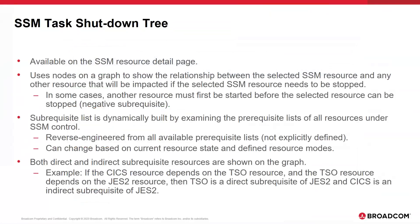The second part of this feature we will discuss is the SSM Task Shutdown tree. This resource relationship tree is available for viewing on the SSM Resource Detail page in a tab called SSM Task Shutdown. In order for a selected resource to stop instead of start, all other resources that depend upon the selected resource must first be stopped. These dependent resources are known as sub-requisite resources. In a similar fashion to prerequisite resources, sub-requisite resources can have dependent resources that must first be stopped before they can shut down. This sub-requisite resource chain is the basis for the SSM Task Shutdown tree diagram.